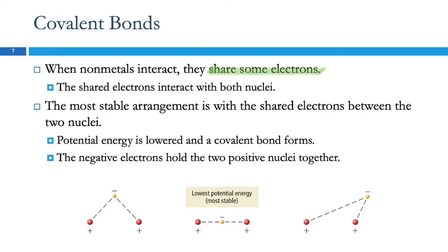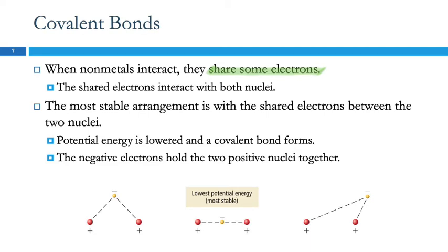Those shared electrons are going to interact with the nuclei of both atoms and hold them together. There are a couple of different possibilities of where the shared electron could be — it could be off to the side or way over here — but the lowest energy, most stable place is when it's between the two nuclei. It's attracted to both of them, and that sort of forms a glue that holds the atoms together.